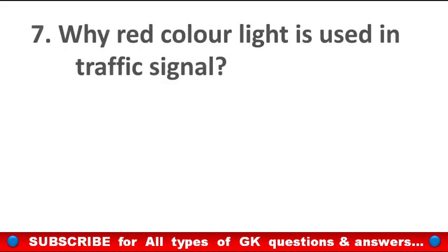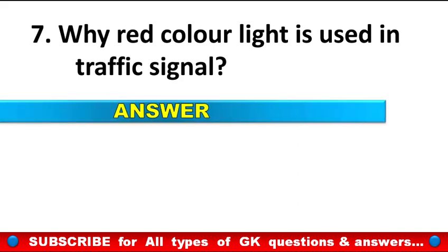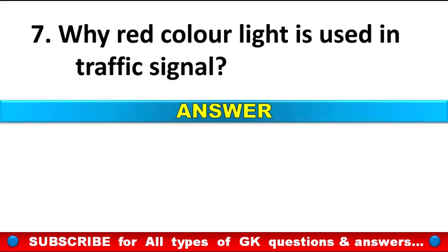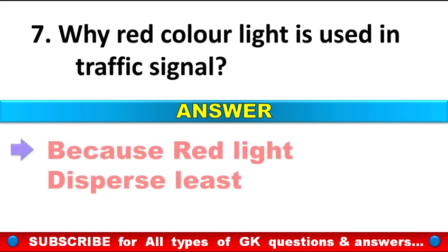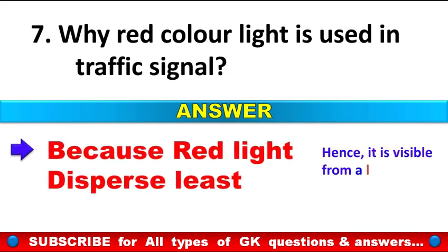Why is red color light used in traffic signals? Answer: because red light disperses least, hence it is visible from a longer distance.